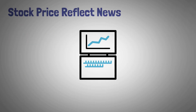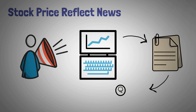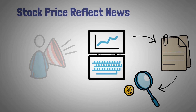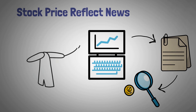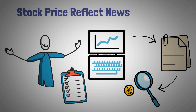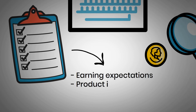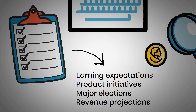The third principle suggests that stock prices react to the news. Stock prices reflect new information that changes the value of the asset, and the price change reflects the hopes and expectations of the market's stakeholders. Moreover, some factors are integrated into the market price — for instance, earning expectations, product initiatives, major elections, and revenue projections.